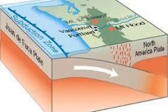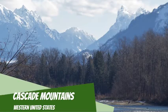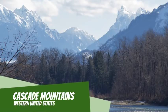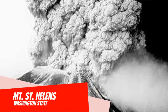The convergence of the Juan de Fuca plate and the North American plate has also created the Cascade Mountains, which contain many volcanoes on the west coast of the United States. One of the most famous volcanoes in the range is Mount Saint Helens in Washington State.